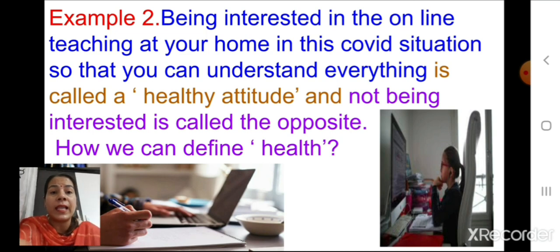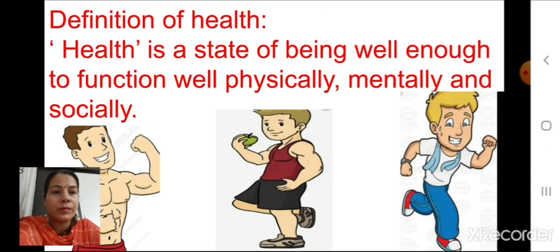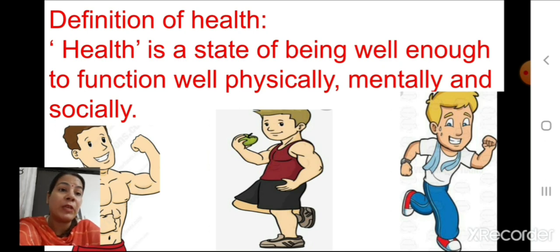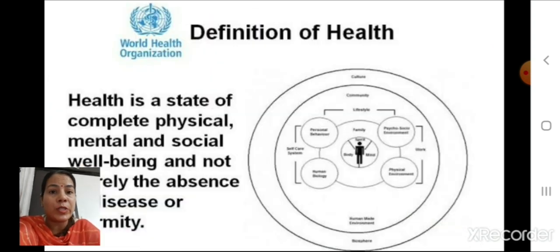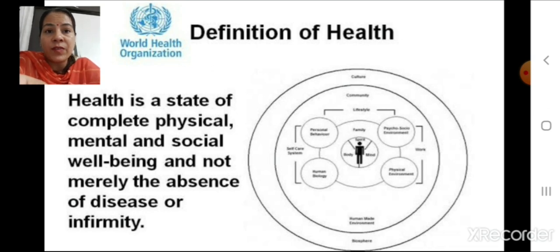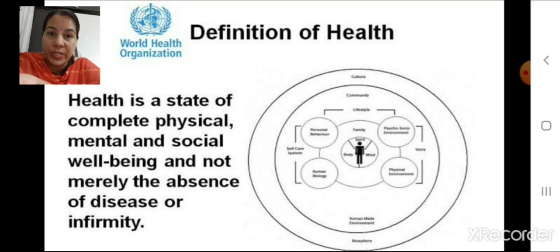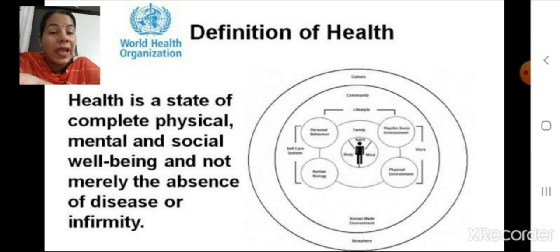So how do we define health? According to your textbook, health is a state of being well enough to function well physically, mentally, and socially. According to WHO, health is a state of complete physical, mental, and social well-being, and not merely the absence of disease or infirmity. So health includes mental and social aspects, not just the absence of disease.